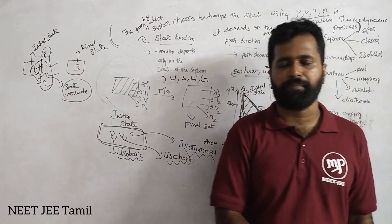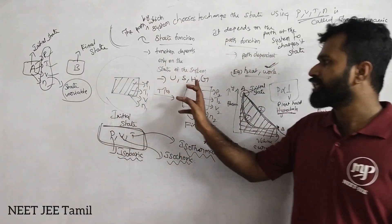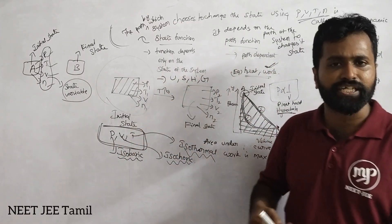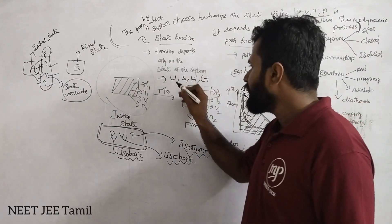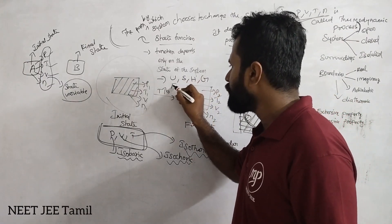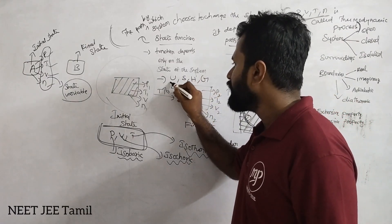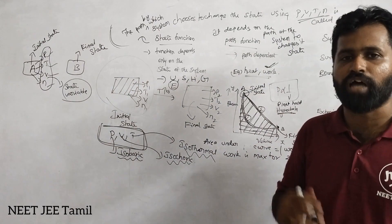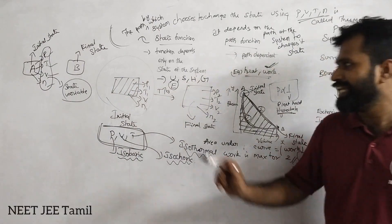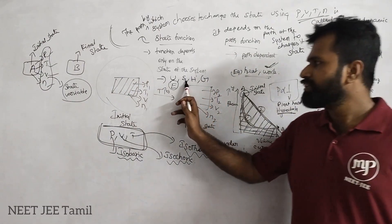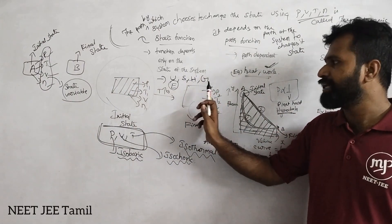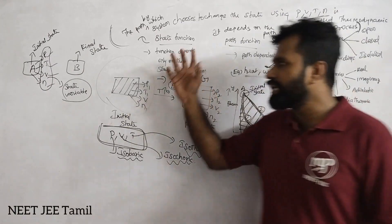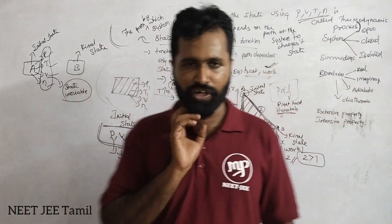So this is the entire chapter — internal energy, represented by U, or E. Entropy, enthalpy, Gibbs free energy. That's the example of state function.